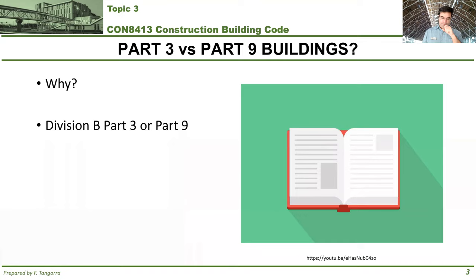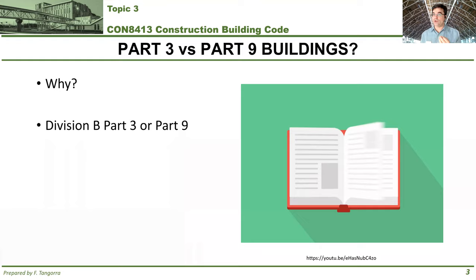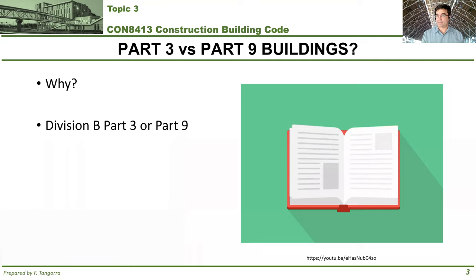Specifically, if you go into Division B of the Ontario Building Code — that's in Volume 1 — you'll notice that the two largest portions of Division B are Part 3 and Part 9. So if right from the beginning we can identify whether the building we're analyzing is a Part 3 building or a Part 9 building, then we know that's where we have to go. If it's a Part 3 building, you flip directly to Part 3 for any valid references. You don't have to flip through all of the parts of Division B. Or if we find that it's Part 9, you go to Division B Part 9 and flip to it.